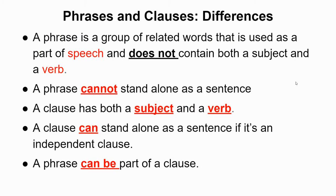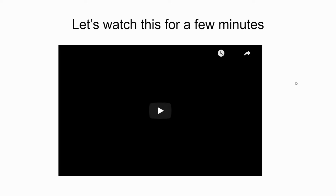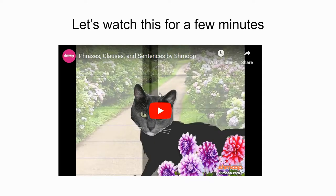Phrases and clauses — the differences. A phrase is a group of related words used as a part of speech that does not contain both a subject and a verb. A phrase cannot stand alone as a sentence. A clause has both a subject and a verb. A clause can stand alone as a sentence if it is an independent clause. A phrase can be part of a clause. So let's watch this video — I think they do a really good job.